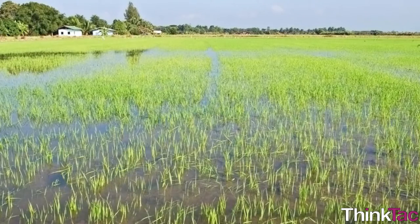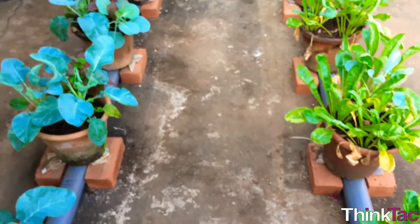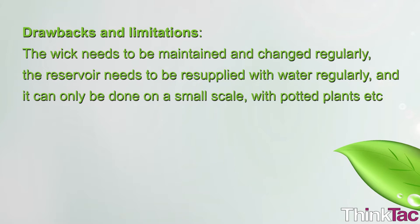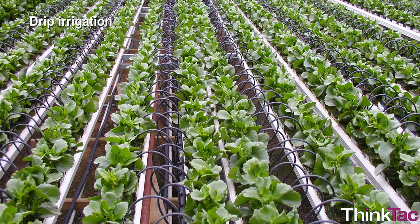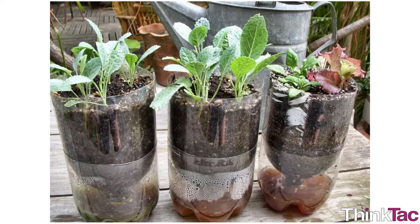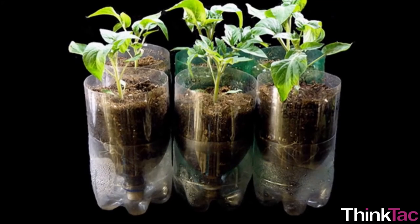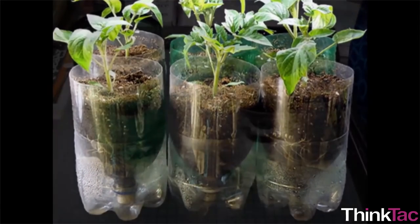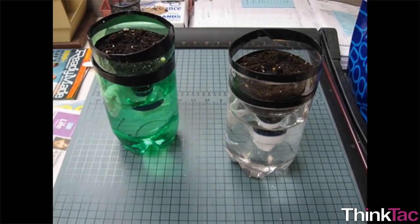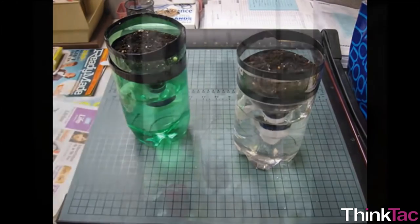The conventional methods use a lot of water, whereas this system of irrigation saves around 80% of water. But this system has a few drawbacks and limitations: the wick needs to be maintained and cleaned regularly, the reservoir needs to be resupplied with water regularly, and it can only be done on a small scale with potted plants. For an entire field at ground level, other systems such as drip irrigation become more popular. But the most remarkable thing about a wick-based system is that the wick will capillary up only as much water as the plant requires — it is the plant that determines how much water it needs, and it gets exactly that much. No less, no more.